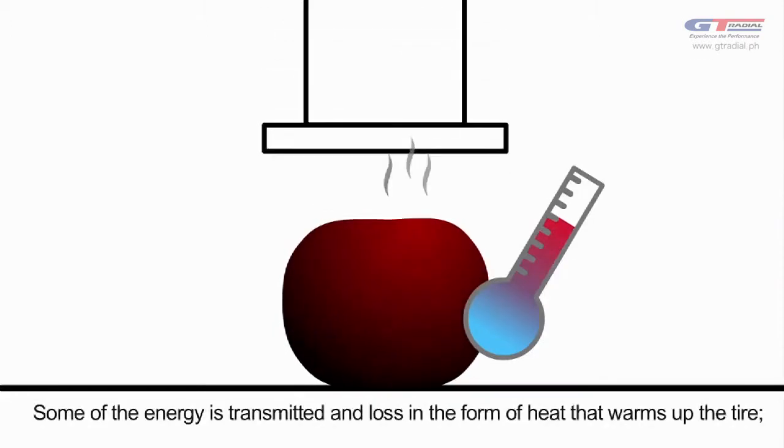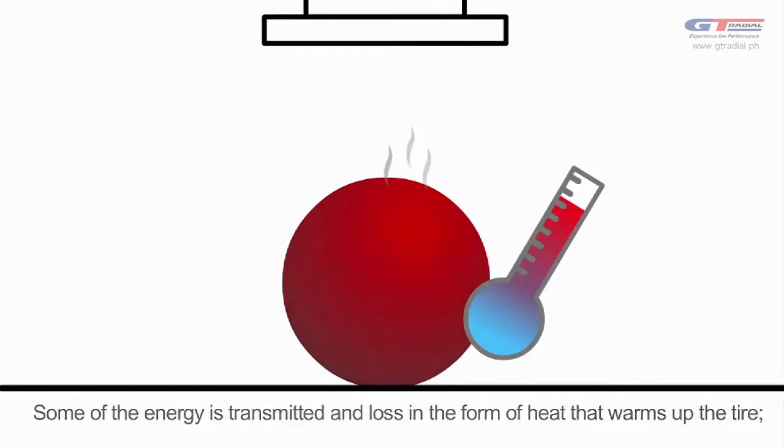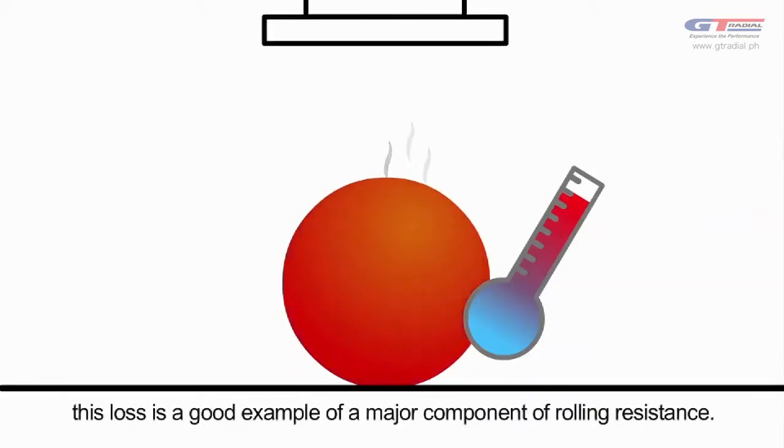Some of the energy is transmitted and lost in the form of heat that warms up the tire. This loss is a good example of a major component of rolling resistance.